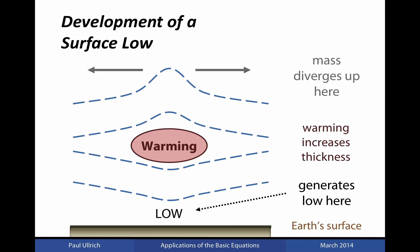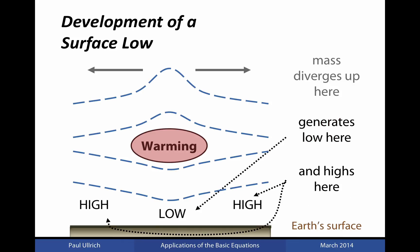Consequently, we lose mass from the fluid column. This loss of mass from the fluid column then causes us to have lower surface pressure values in the fluid column, analogous to the equation that we derived earlier within this lecture. And this leads to a generation of a surface low pressure. And in addition to the surface low pressure that forms immediately below the warming, we also have corresponding high pressure regions located to each side of the low.